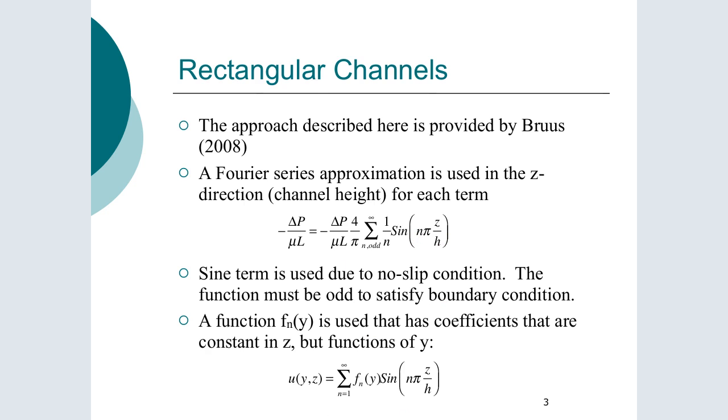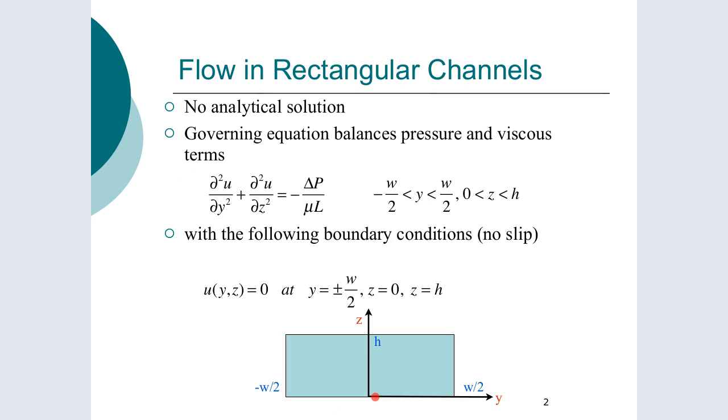So we'll use a sine term in that Z direction. There are solutions of this form where we have the n pi Z over H and in White they have it as the cosine term. Again by using the sine term what we have here is that the sine is zero at zero so we get the no slip condition on the bottom wall and then we have the sine of n pi up at the top and again that gives us zero so we have again the no slip condition valid on the top wall in accordance with our boundary conditions.